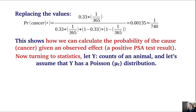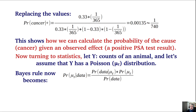Now turning to statistics, let's assume y are the counts of an animal — the abundance — and that y follows a Poisson distribution with parameter mu. The Bayes rule becomes: the probability of mu given the data equals the probability of the data given mu times the probability of mu, divided by the probability of obtaining the data.